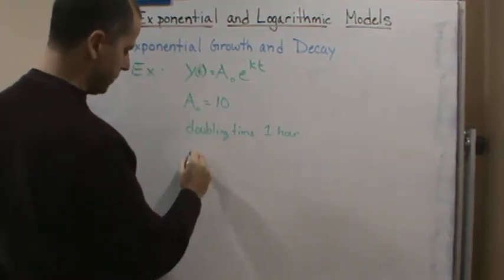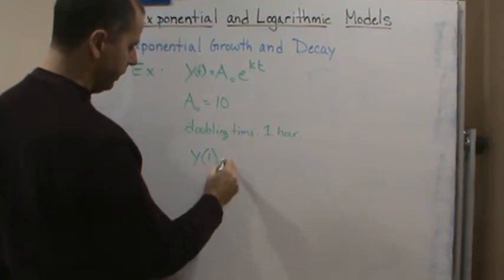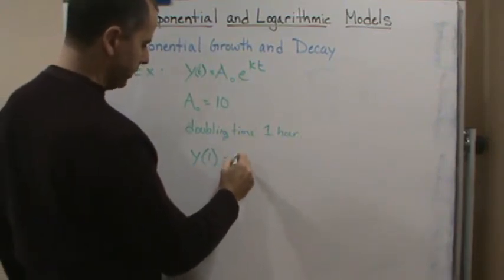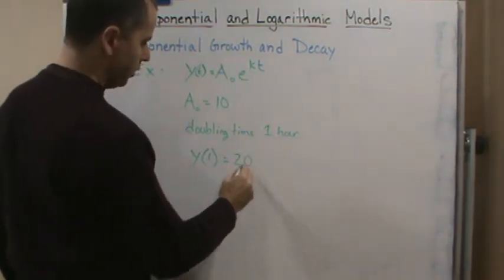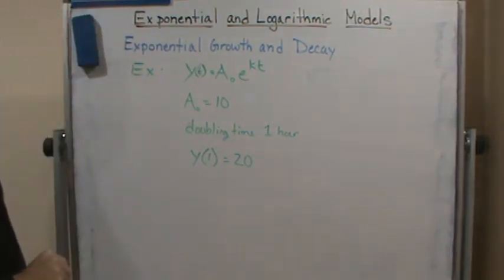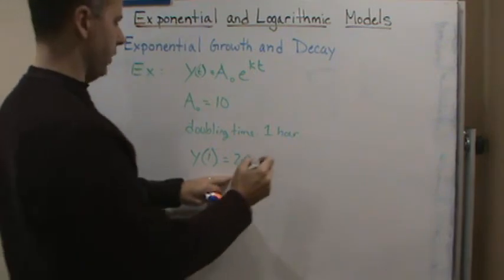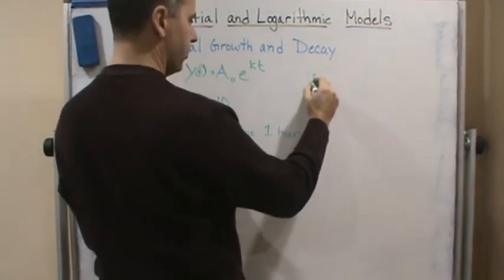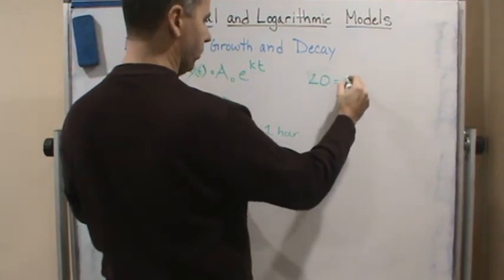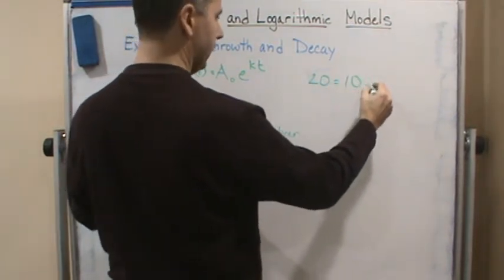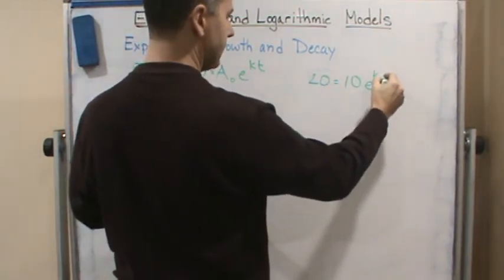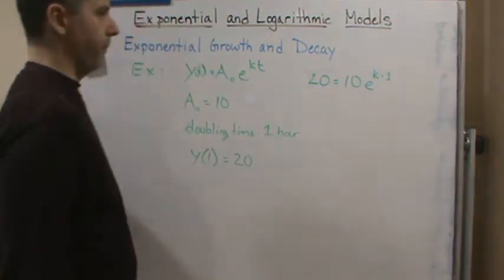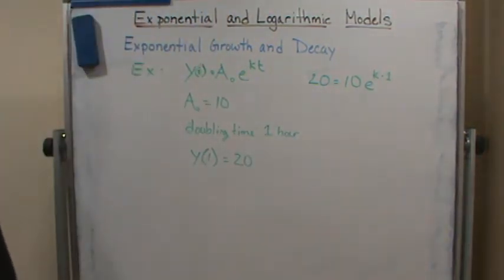I know so this doubling time tells me that y of one is going to equal 20. I'm going to use this information. I know when y is one I get 20, so this is going to be 20 equals 10 e to the k times one. Now all I have to do is solve for k.